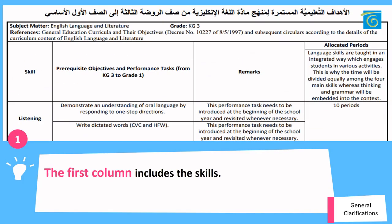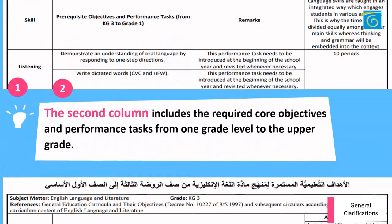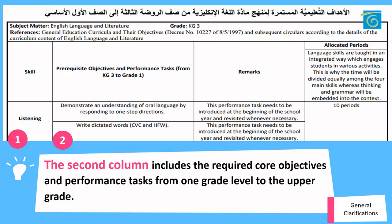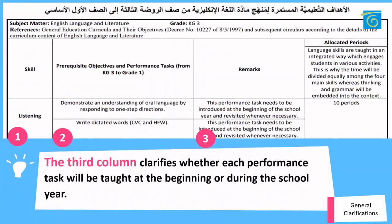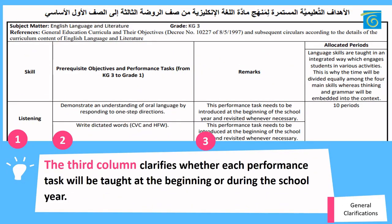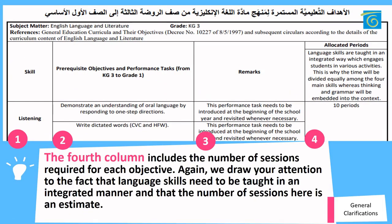The second table is about prerequisite objectives. The first column includes the skills. The second column includes the required core objectives and performance tasks from one grade level to the upper grade. The third column clarifies whether each performance task will be taught at the beginning or during the school year. The fourth column includes the number of sessions required for each objective.